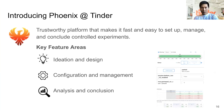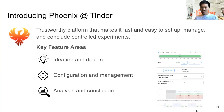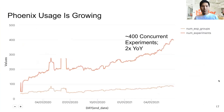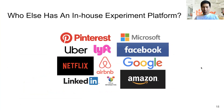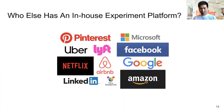My product at Tinder is called Phoenix — a trustworthy platform that makes it fast and easy to set up, manage, and conclude controlled experiments. Our key feature areas are ideation and design of experiments, configuration and management, then analysis and conclusion. The usage of our platform is growing, roughly doubling every year, up to about 400 concurrent experiments. At a certain scale, it makes sense to have an in-house experimentation platform — many big-name tech companies have their own, sometimes more than one.